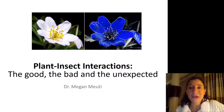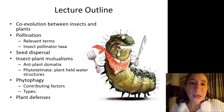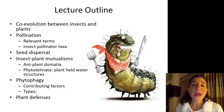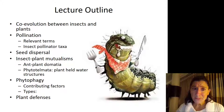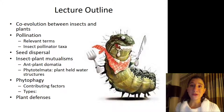Today's topic is on plant-insect interactions — the good, the bad, and the unexpected. First, we are going to talk about the co-evolution between insects and plants, and then we are going to talk about some of the positive relationships between insects and plants — namely, the way that insects are pollinators of plants, and also the role that they play in seed dispersal.